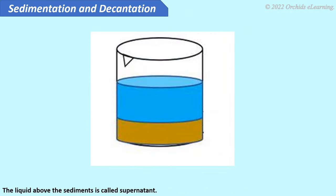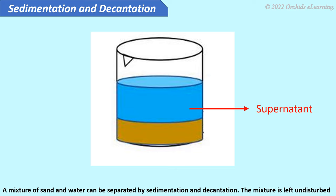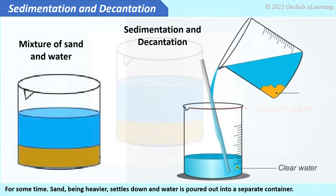The liquid above the sediments is called the supernatant. A mixture of sand and water can be separated by sedimentation and decantation. The mixture is left undisturbed for some time; sand, being heavier, settles down, and the water is poured out into a separate container.